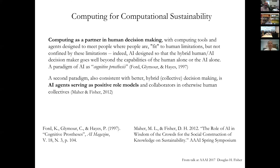I think computing for computational sustainability — just as we view AI — has two perspectives. One is a tool-based perspective: a collection of tools used in partnership with human decision makers for analysis of data. This falls into the cognitive prosthesis perspective from Glymore and Hayes. There's a second paradigm — the agent perspective — which I think we don't think about enough, and increasingly I am thinking more about computational sustainability in terms of this agent perspective.